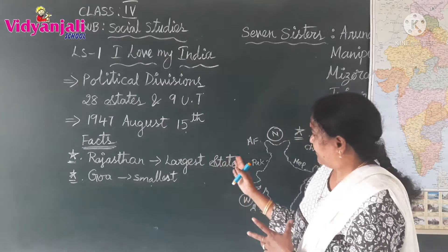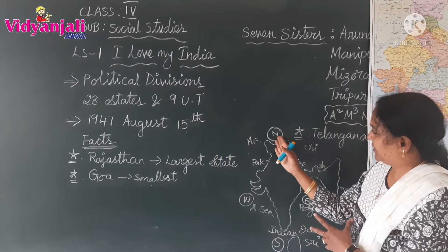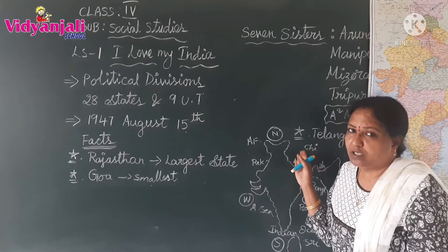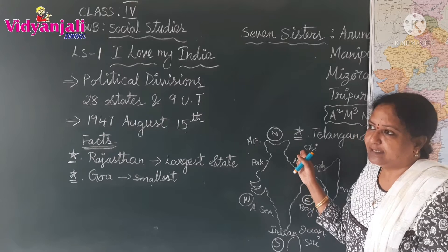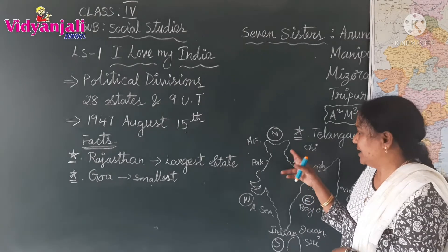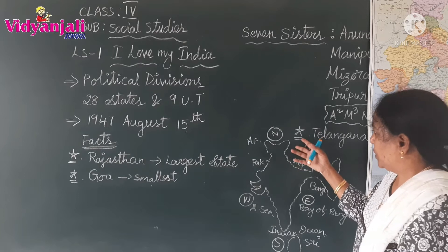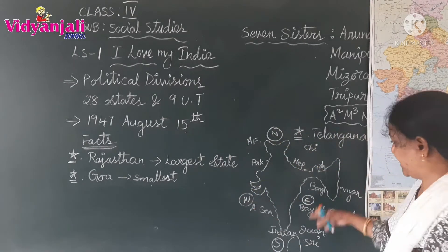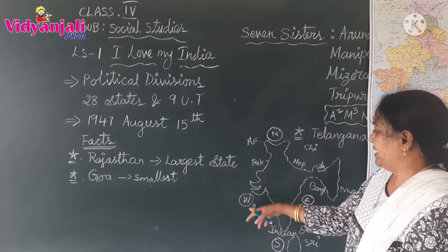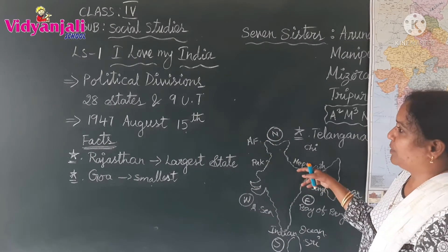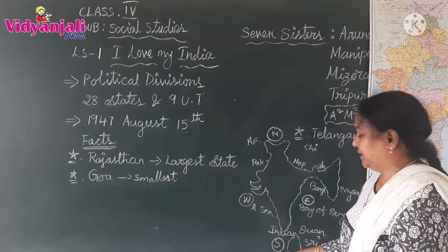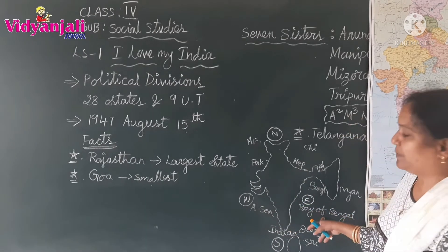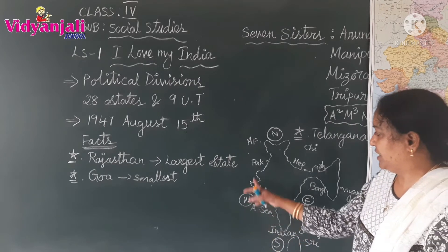In the northern part of our country, there are the Himalayan mountains. The great Himalayan mountain ranges are located there. Now, in the four sides — East, West, North and South — in the North, Himalayan mountains are there. In the South, Indian Ocean. On the West, Arabian Sea. And in the East, Bay of Bengal.